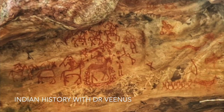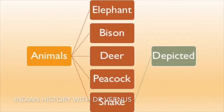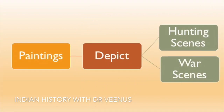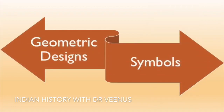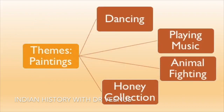The paintings generally portray everyday life of prehistoric men, often in stick-like human figures. Various animals like elephant, bison, deer, peacock and snake are depicted. The paintings also show hunting scenes and war scenes with men carrying weapons like bows, arrows, spears, shields and swords. Some paintings also have geometric designs and symbols. Other themes include dancing, playing music, animal fighting and honey collection.